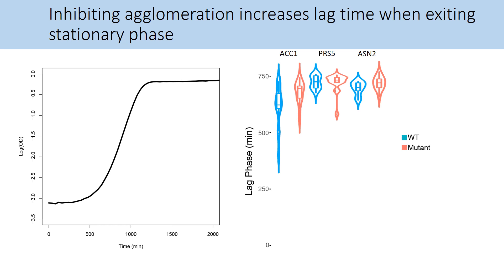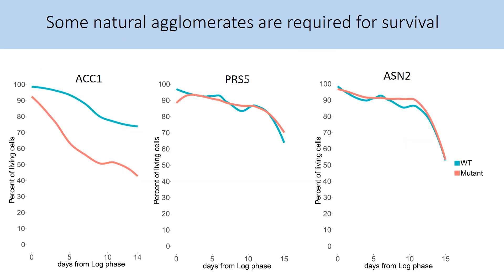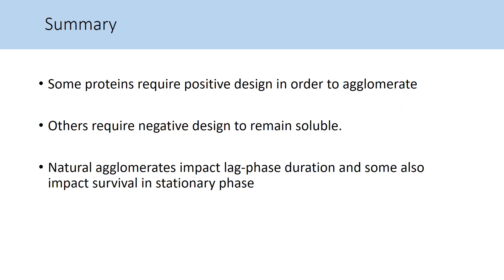This led us to conduct viability assays of cells in stationary phase. We detected a significant difference in cell viability between wild-type and mutant ACC1. About 10% of the cells were not viable after entering stationary phase, and this difference increased over time. In ASN2 and PRS5, no significant difference was found between the wild-type and the mutant. To summarize: some agglomerates require positive design in order to agglomerate, others require negative design to remain cytosolic, and natural agglomerates impact lag phase duration, with some also impacting survival in stationary phase.